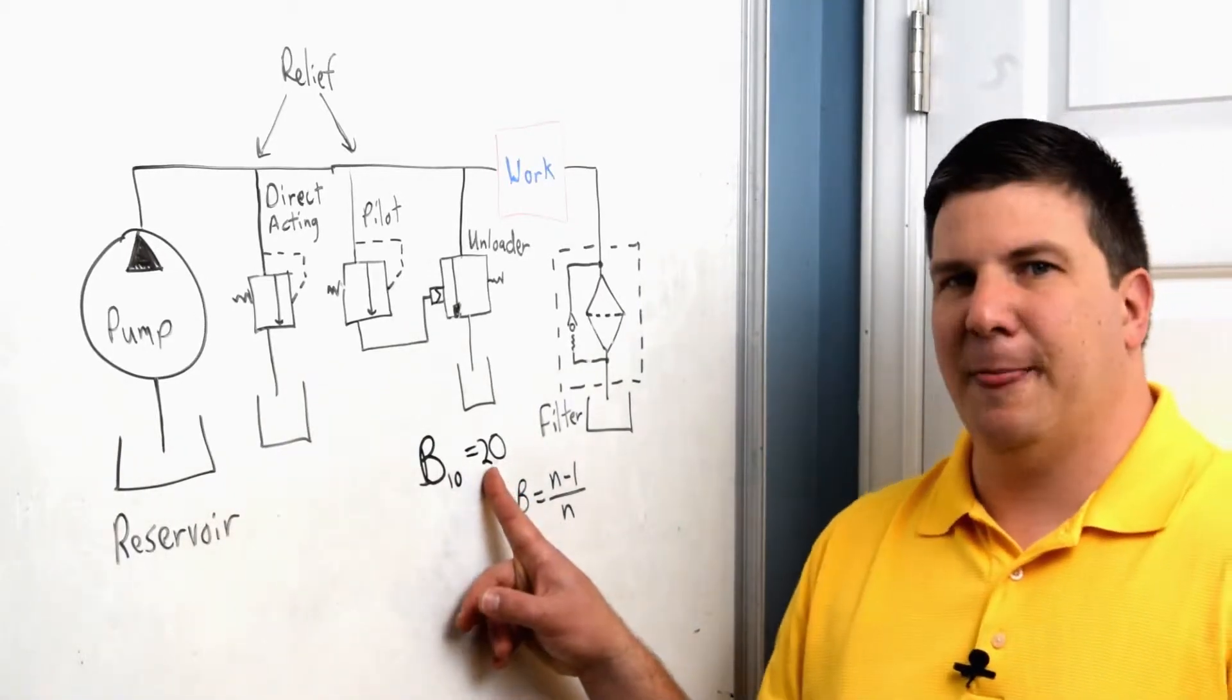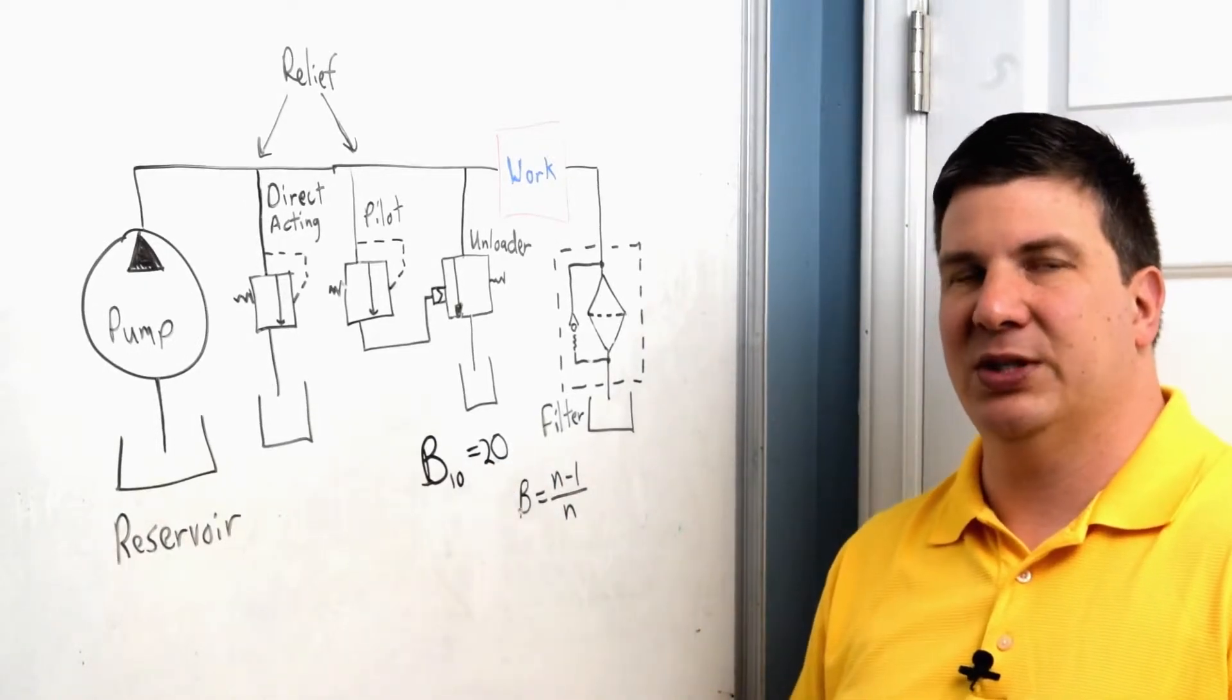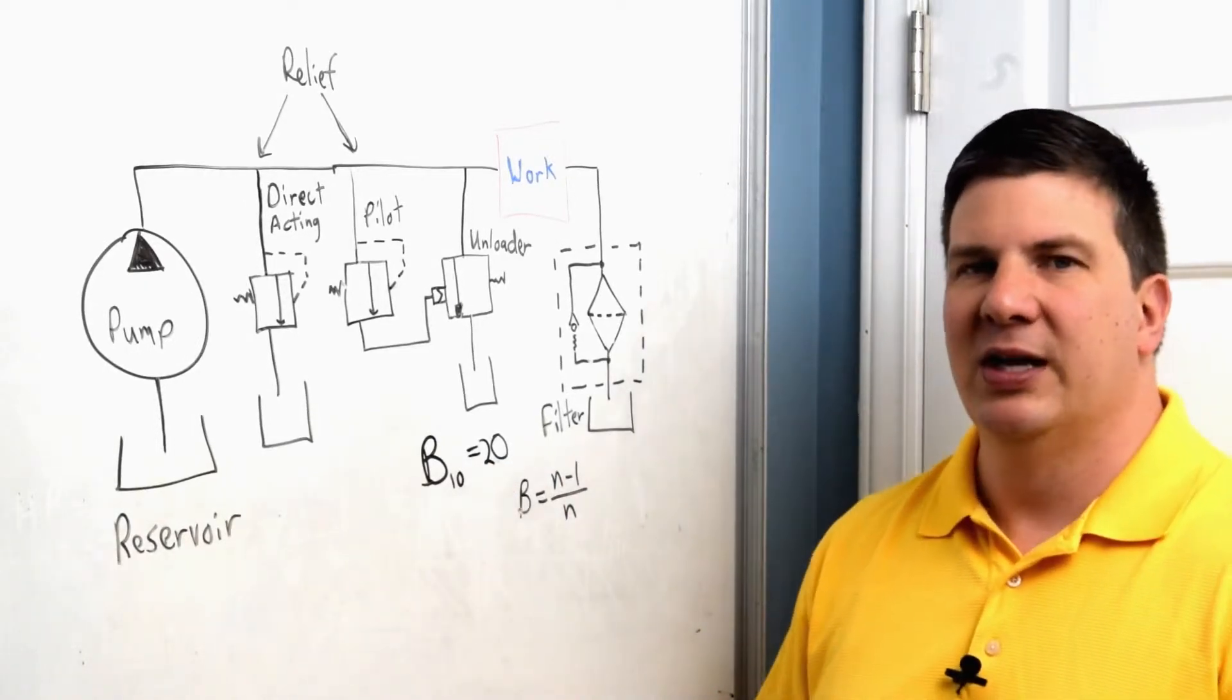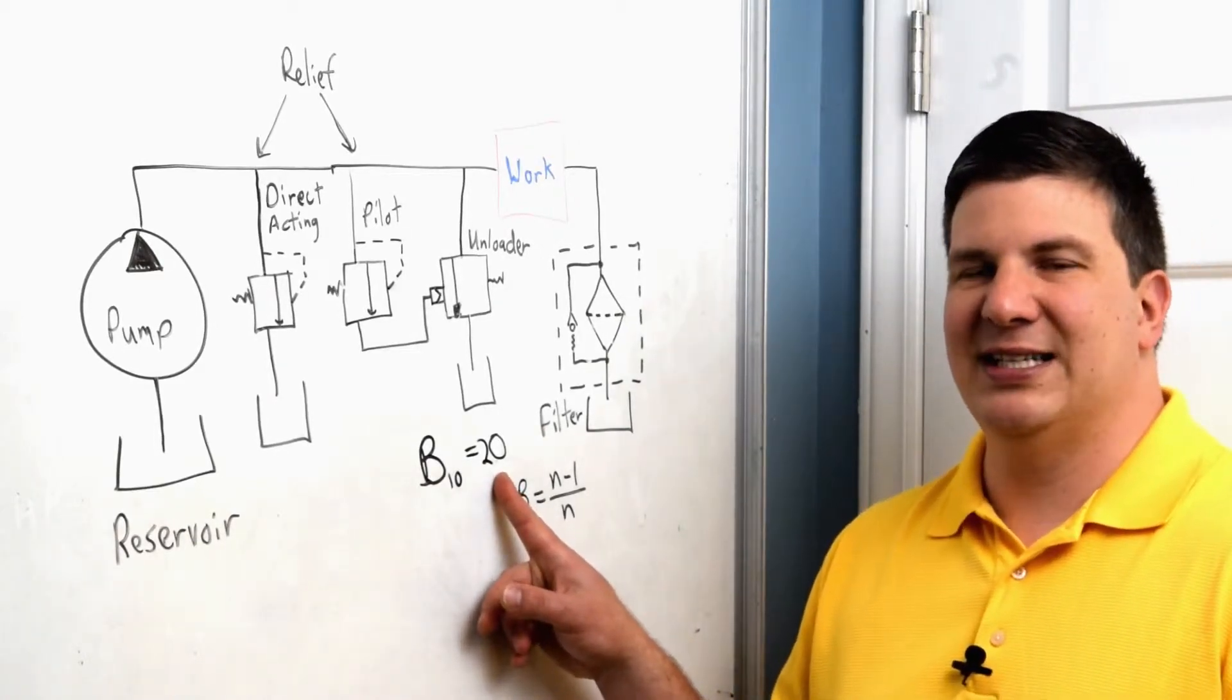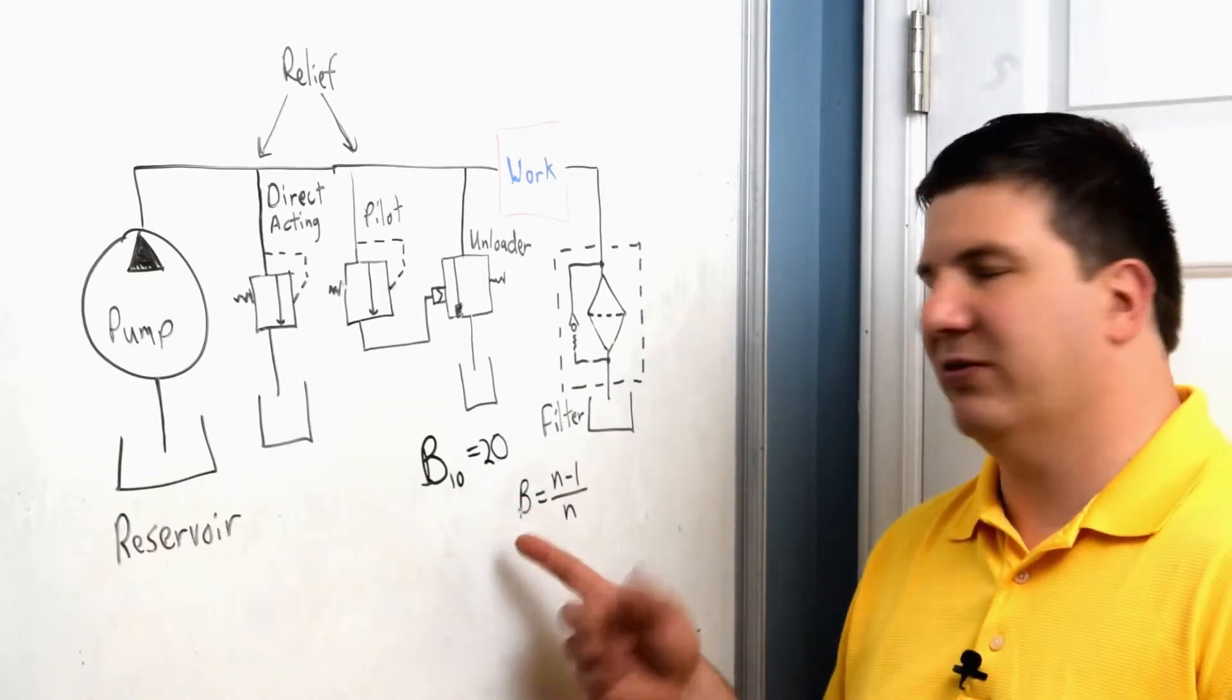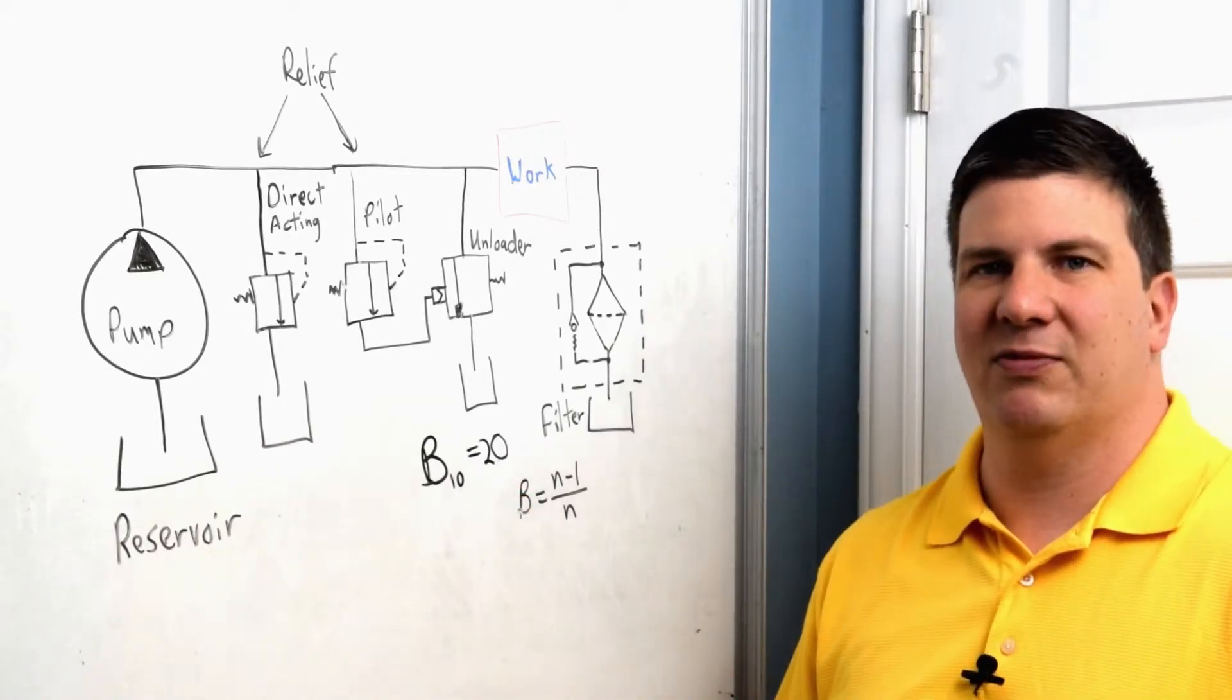But I multiplied that by 10 and I went from 50 to 95 percent. So that seems like a good jump. Now, if I go from a 20 to a hundred, that's 99 percent efficient from 95. I went up five times and only got four percent better.